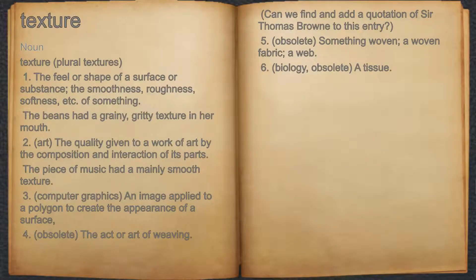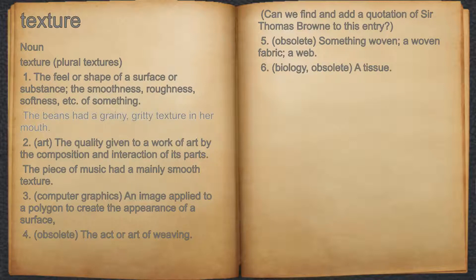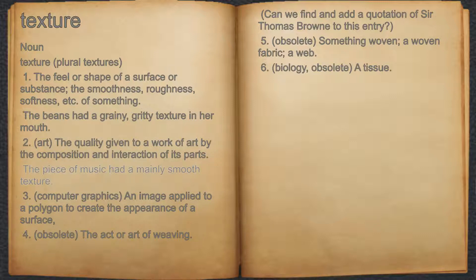Texture. Noun. One: the feel or shape of a surface or substance — the smoothness, roughness, softness, etc. of something. For example: the beans had a grainy, gritty texture in her mouth. Two: art — the quality given to a work of art by the composition and interaction of its parts. For example: the piece of music had a mainly smooth texture.